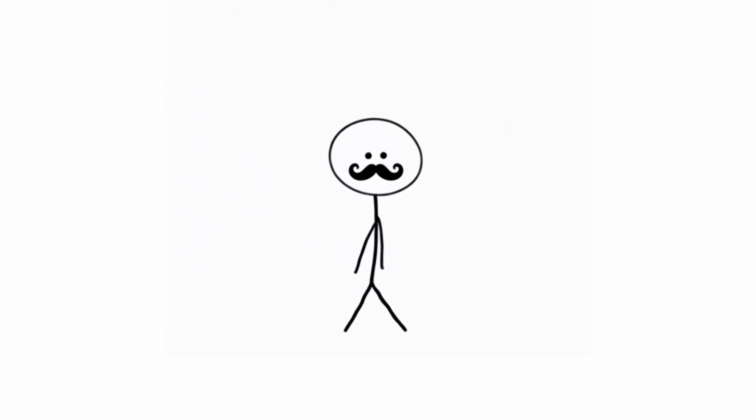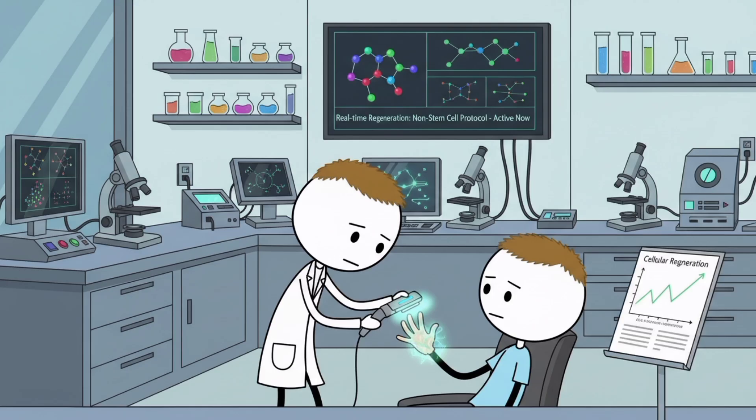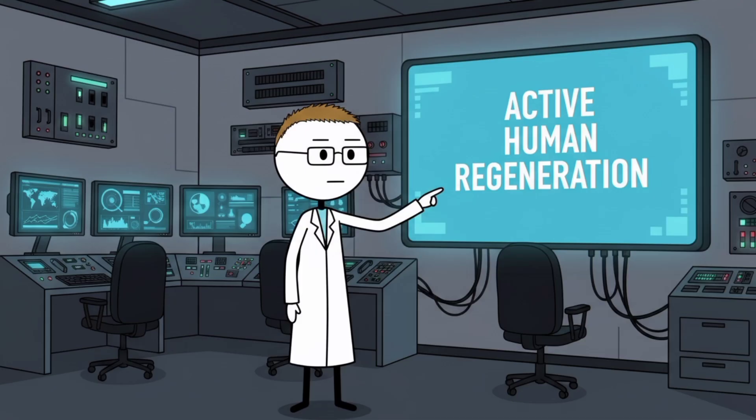It wasn't perfect, but it was a whole limb where there was just a stump. This isn't stem cell fantasy or decades-away technology. This is happening right now. The regeneration code was always in our DNA. We just needed the cheat code to activate it.